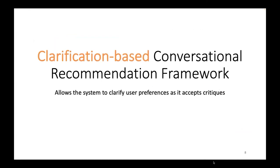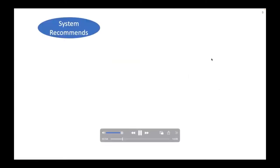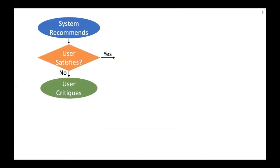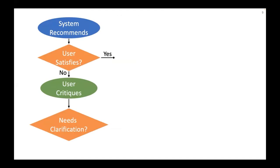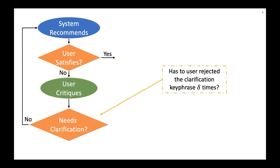For this work, we propose a novel clarification-based conversational recommendation framework, which allows the system to clarify the user's preference as it accepts user critiques. The novelty is an extra workflow step that allows the system to ask users questions to clarify preference uncertainties. The judging criteria could be whether the user has denied the clarifying keyphrase more than delta times.